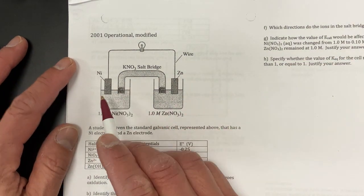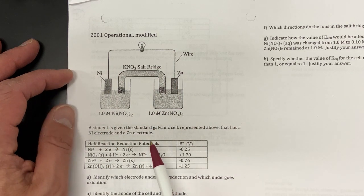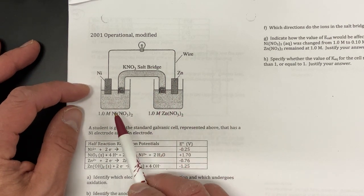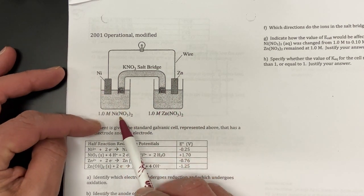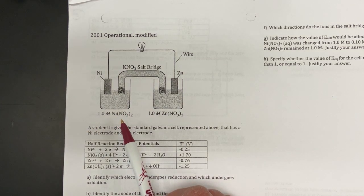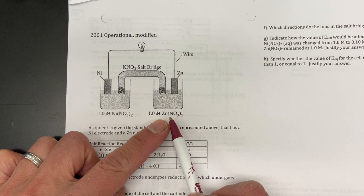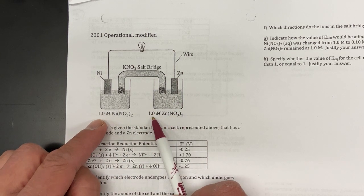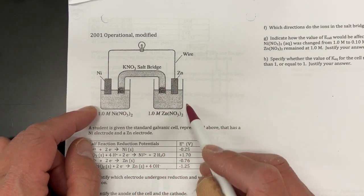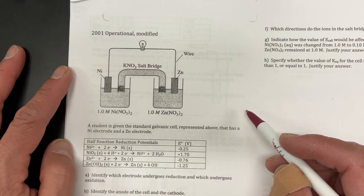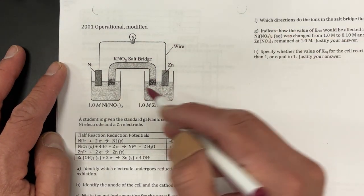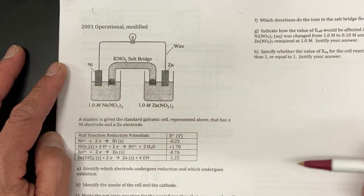So this is a nickel-zinc system. I have a nickel electrode in here and you can see that it is in a nickel nitrate solution, and zinc is in a zinc nitrate solution. They're both at one molar, just standard conditions. And we have a salt bridge and we have a wire.